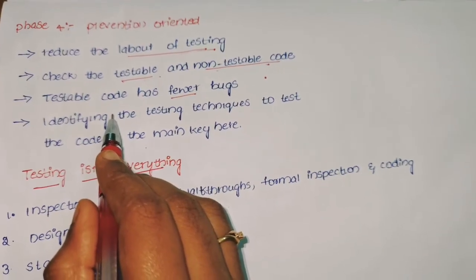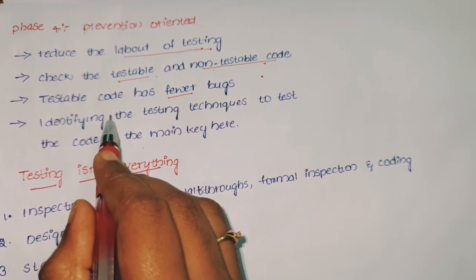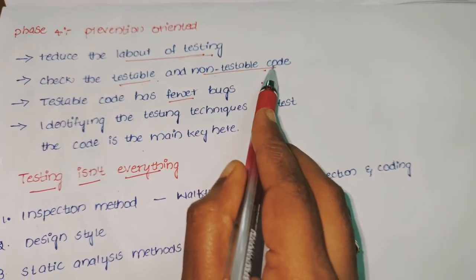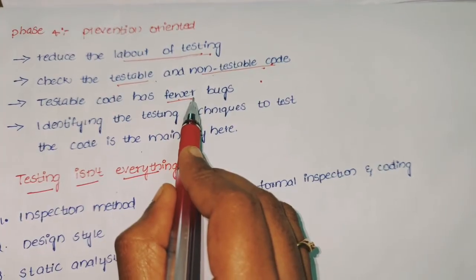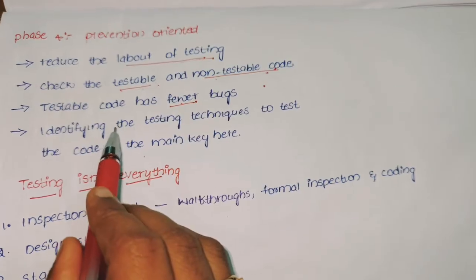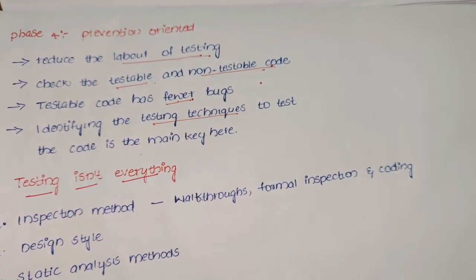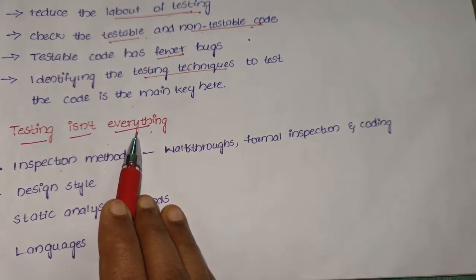Coming to Phase 4 prevention oriented: in this, labor of testing is reduced by checking the testable and non-testable codes. Testable code has fewer bugs compared to non-testable codes. The main key feature is identifying the testing techniques to test the code.